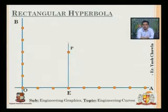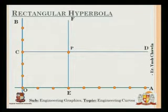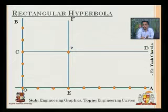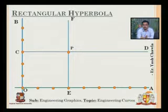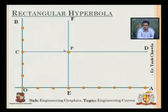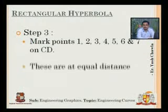As you can see, EF is the line parallel to OB and CD is the line parallel to OA. I have these lines parallel to the axes and passing through point P, which is the point on the hyperbola given in the question.